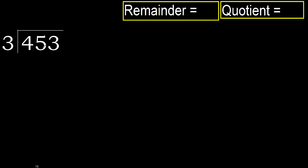453 divided by 3. 4 is not less, therefore work with 4. 3 multiplied by which number is nearest to 4, but not greater? 3 multiplied by 2 is 6.